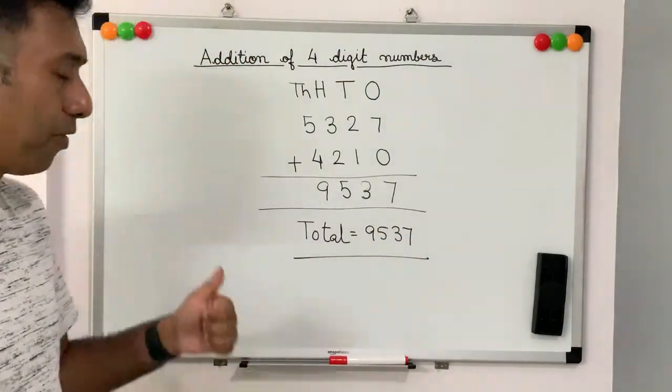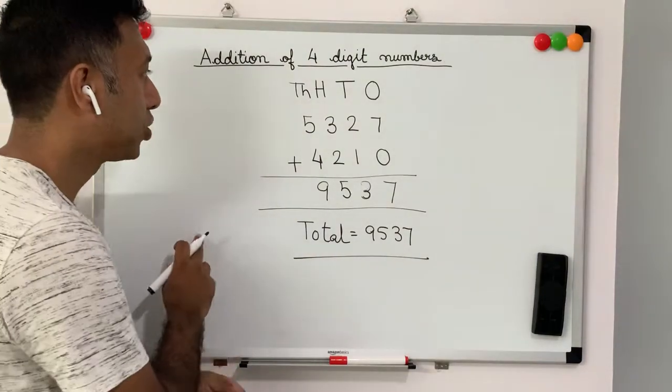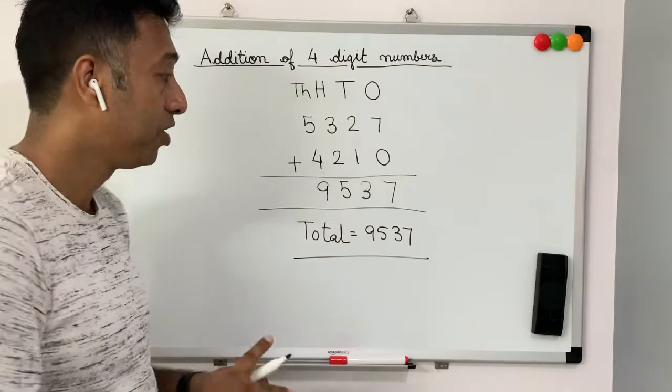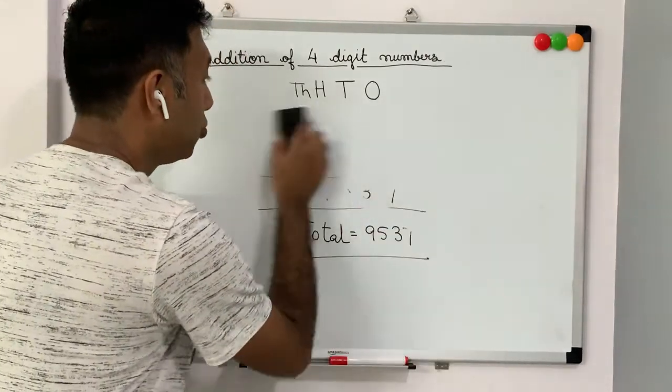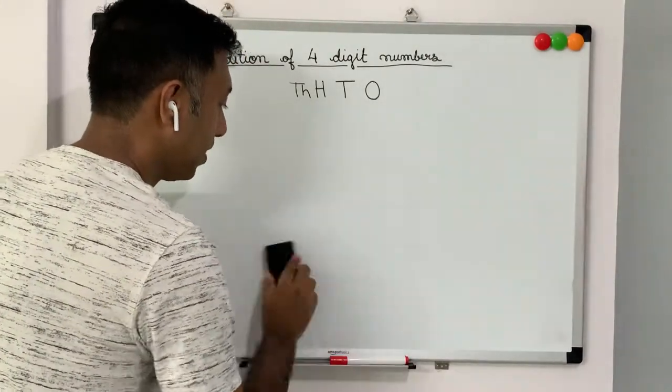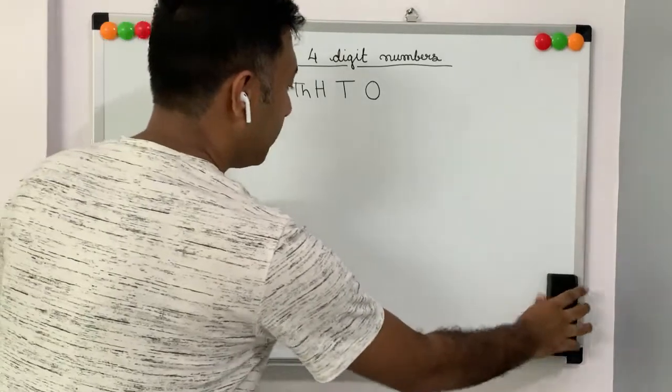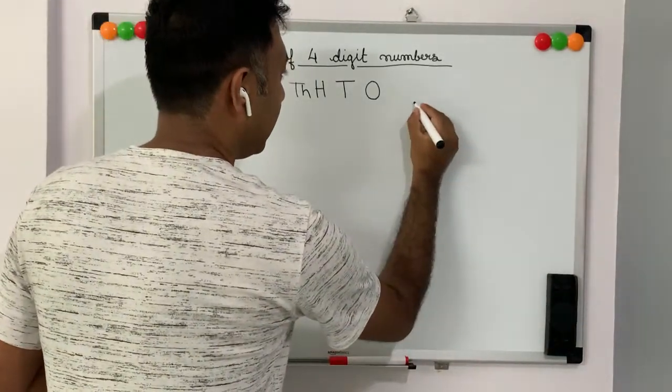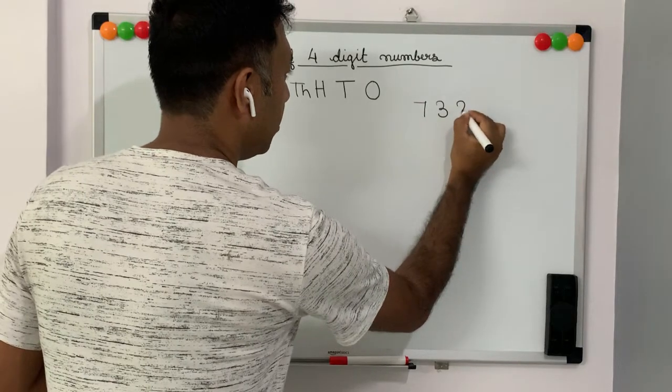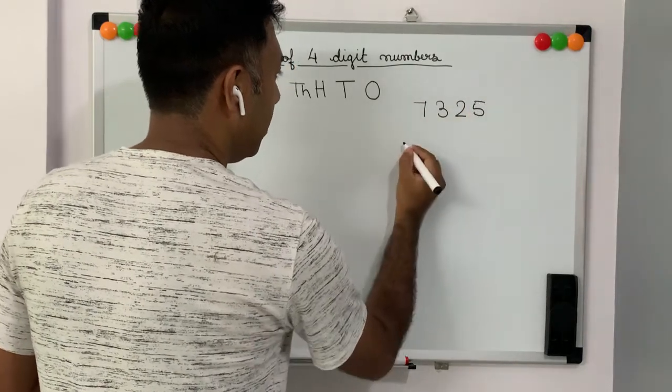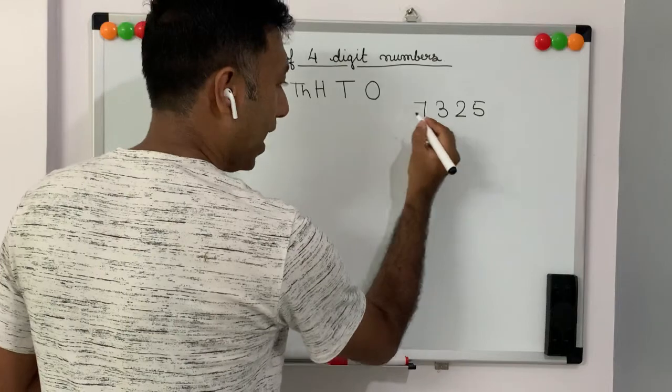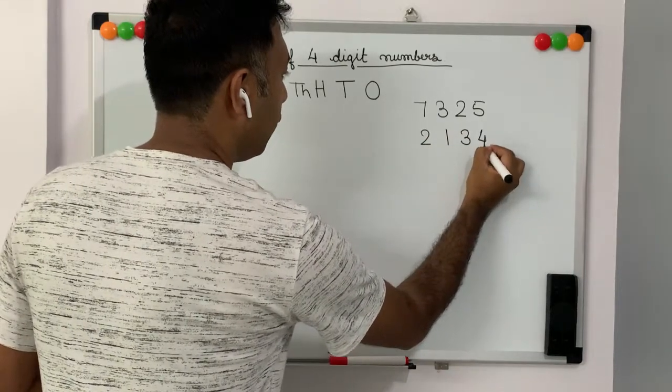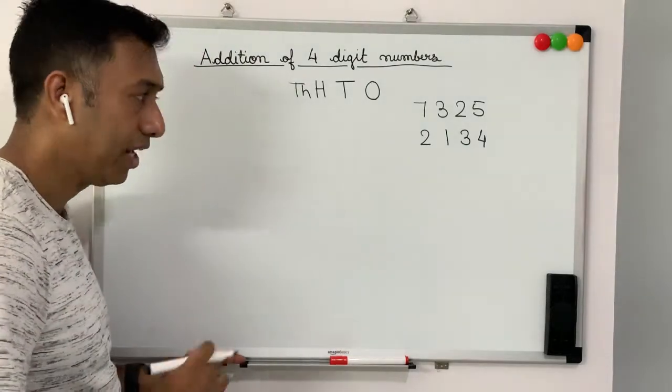This was about addition of 4-digit numbers. I'm giving you a few sums, which I would want you to do at home. Now, before you leave this video, try to practice addition of these numbers: 7, 3, 2, 5 and you have to add it to 2, 1, 3, 4. This is your homework.